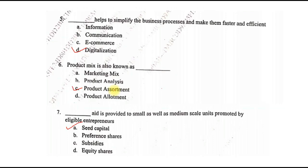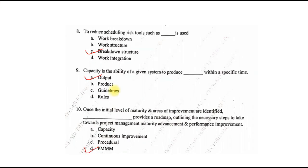Digitalization helps to simplify the business processes and make them faster and more efficient. Product mix is also known as product assortment. Seed capital aid is provided to small as well as medium scale units promoted by eligible entrepreneurs. To reduce scheduling risk, tools such as breakdown structure are used. Capacity is the ability of a given system to produce output within a specific time.